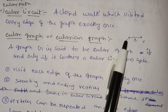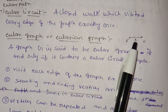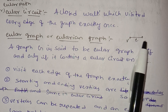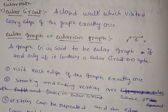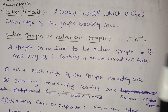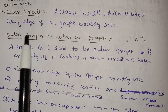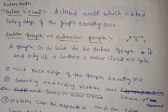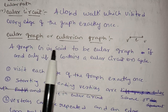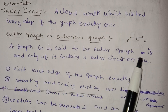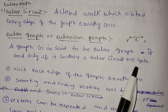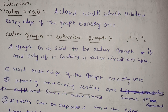In an Euler circuit, edges must not be repeated — each edge is visited exactly once. An Euler's graph is a graph that contains an Euler's circuit or cycle.